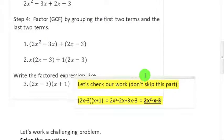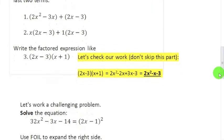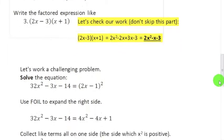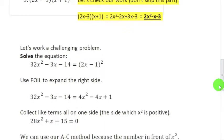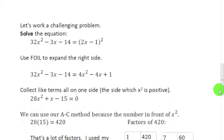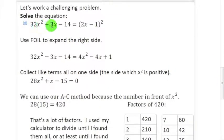Don't skip that part. It is important that you do that, to be careful and to check and make sure you don't make mistakes. Next one. This is a more challenging problem. We start off with this equation: 32x² - 3x - 14 = (2x - 1)².